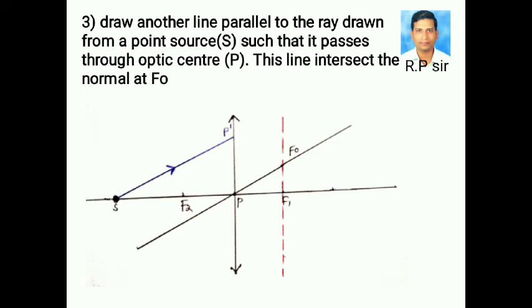Next, draw a parallel ray to the incident ray such that it passes through optic center, and this line intersects the normal at F0.